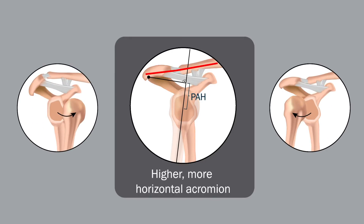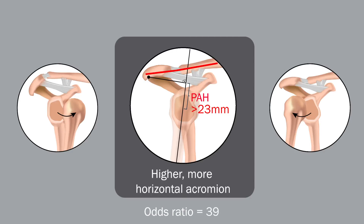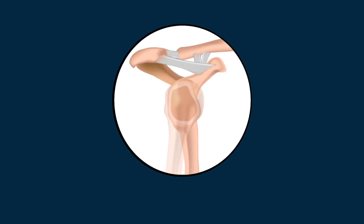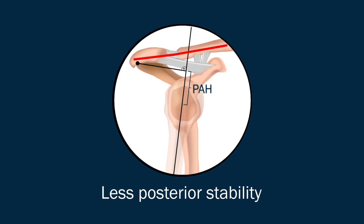In fact, if the posterior acromial height exceeded 23 mm, the odds ratio of having posterior instability was 39. It was hypothesized that an acromion situated higher and oriented more horizontally provides less posterior restraint on the humeral head.